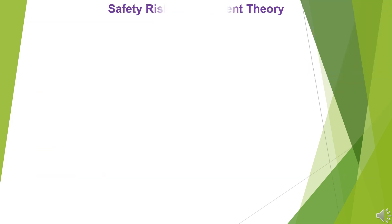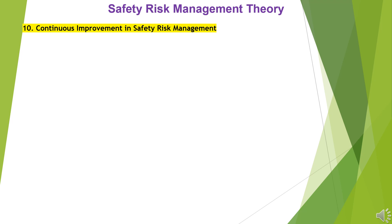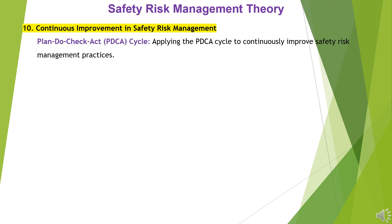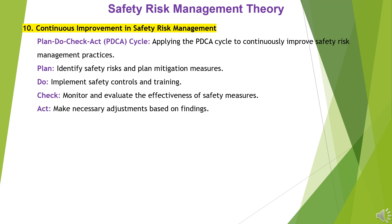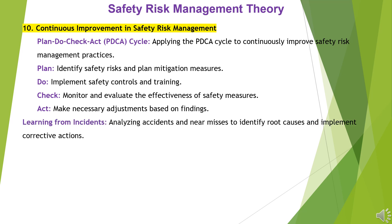10. Continuous Improvement in Safety Risk Management. Applying the PDCA Cycle to continuously improve safety risk management practices: Plan — identify safety risks and plan mitigation measures; Do — implement safety controls and training; Check — monitor and evaluate the effectiveness of safety measures; Act — make necessary adjustments based on findings. Learning from incidents involves analyzing accidents and near misses to identify root causes and implement corrective actions.